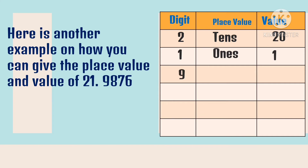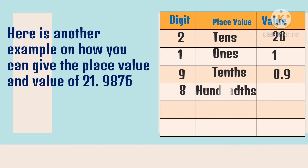Now let's proceed with the place value and value of the decimal numbers. The digits in the decimal places start with 9. The place value of 9 is tenths, and the value of 9 is 9 tenths. Then digit 8 — we place a zero as the placeholder for the tenths place.